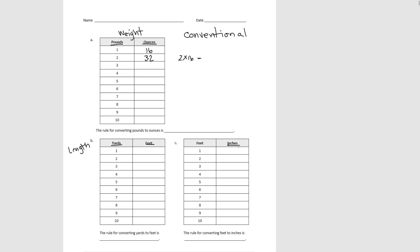The other strategy is: since the pounds are increasing by one every time and there are 16 ounces in a pound, we could say 2 pounds is 32 ounces, and another pound would add 16 more, giving 48 — the same as 3 times 16. So we can continue filling the table either by multiplying or by adding 16 every time.